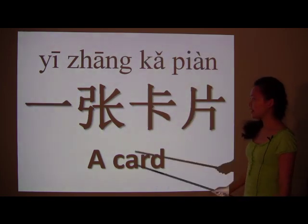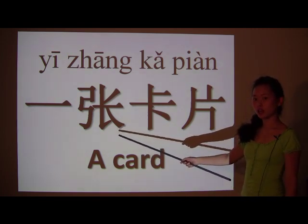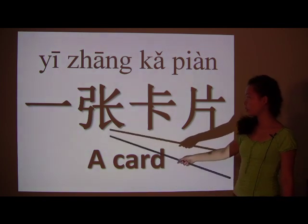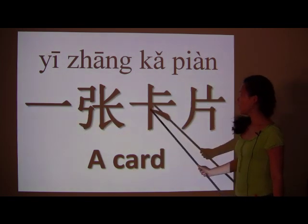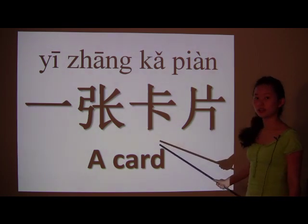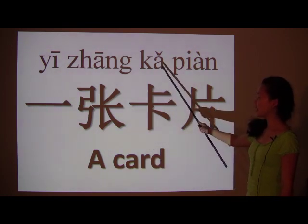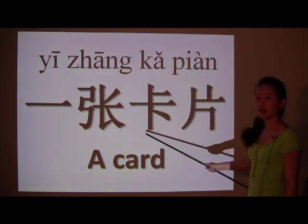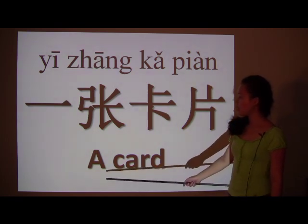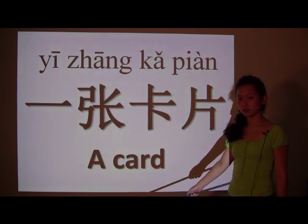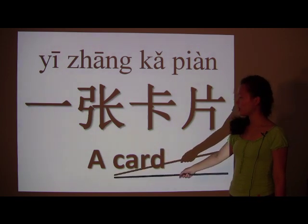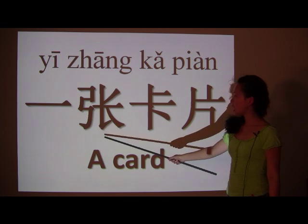Now, paper and paper products also work for 张. So a card is a paper product, and you would use this article again. A card is 一张卡片. 卡片 — two characters meaning card. So when you say one card or a card, remember the article you're supposed to use, which is 张 for paper products, and the number you're referring to. 一张卡片 for a card. Alright, thank you.